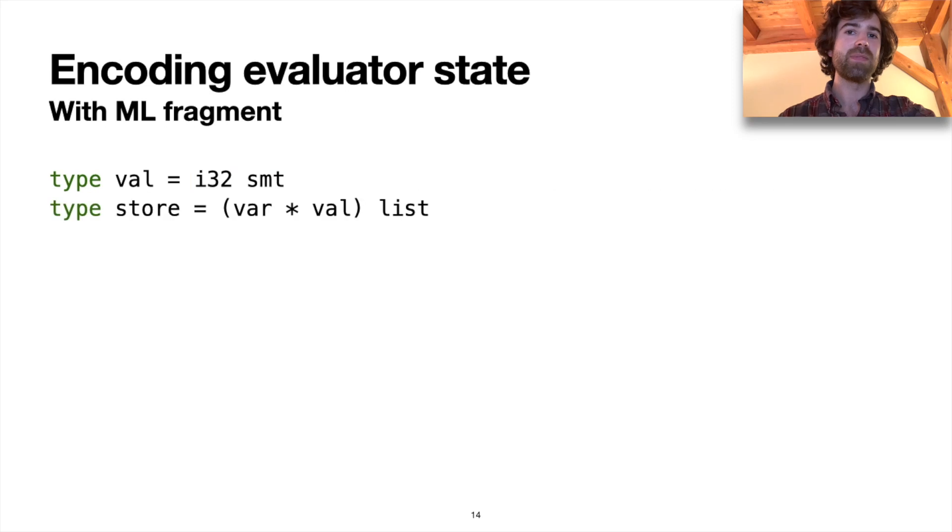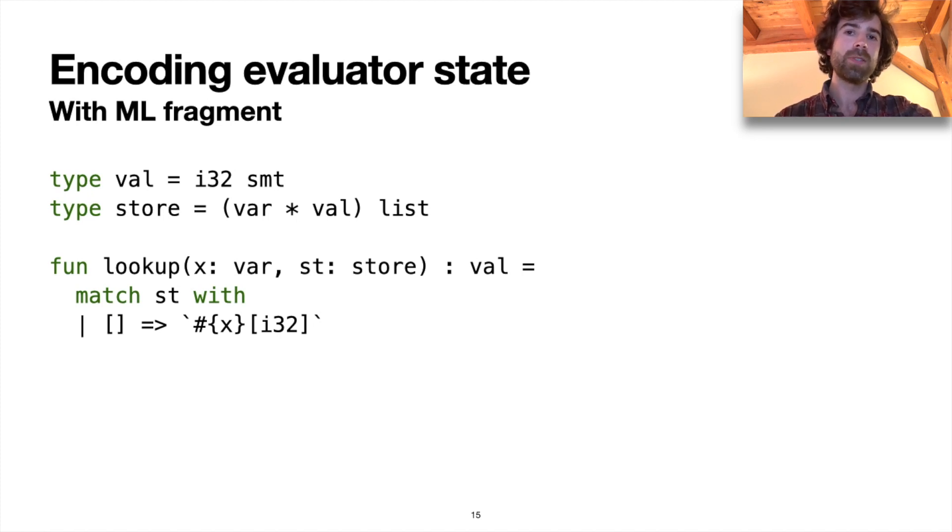And then we can define a store mapping variables to values and a function for looking up variables in the store. The interesting case here is when a variable is not in the store, because then what we're going to do is actually create and return a symbolic bit vector. And this is the way that symbolic values are actually going to enter our evaluation. The other case for lookup is standard.